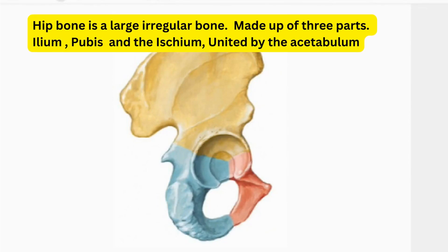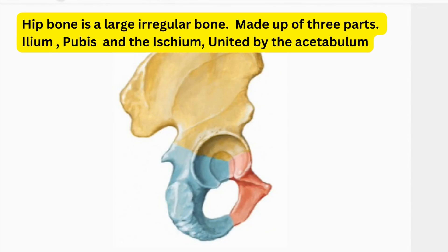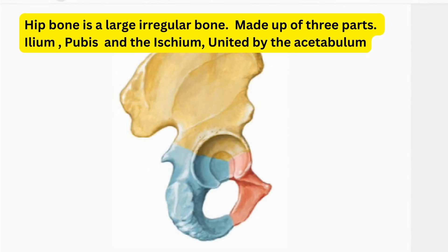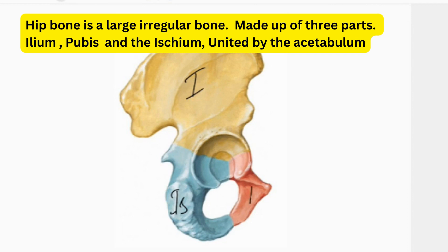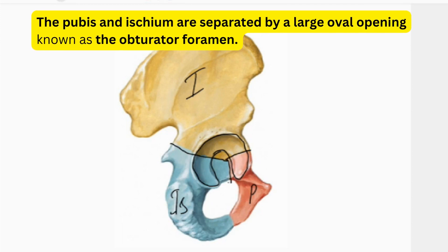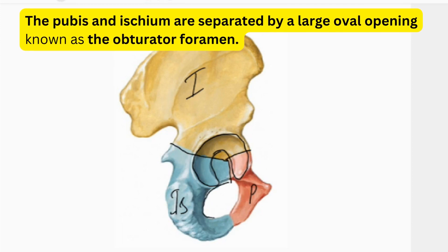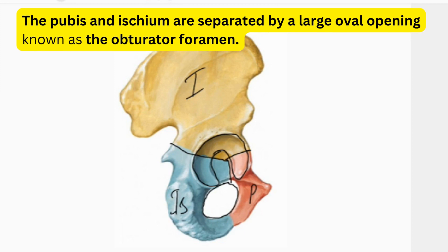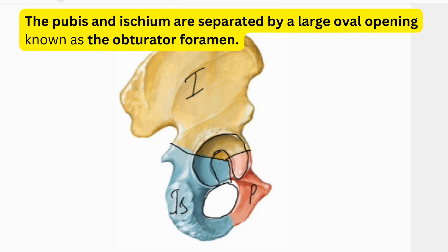We will learn about the hip bone. The hip bone is a large irregular bone made up of three parts: the ilium, the ischium, and the pubis. All three parts are connected by the acetabulum, and they are connected by a Y-shaped cartilage. The pubis and the ischium are separated from each other by an oval-shaped opening known as the obturator foramen.